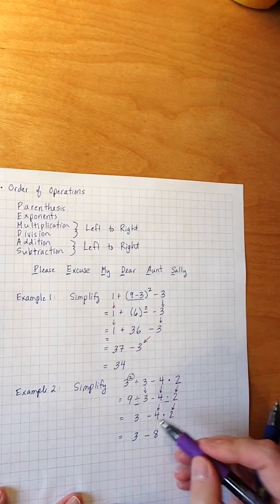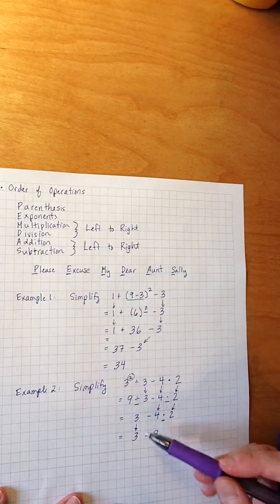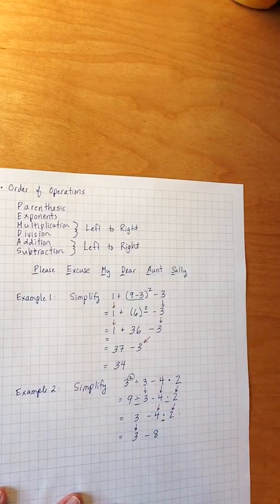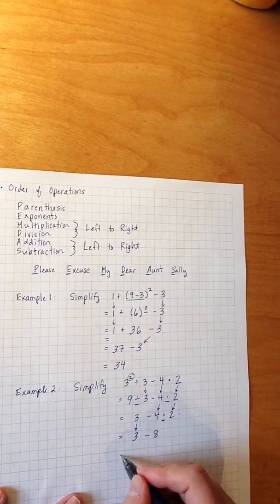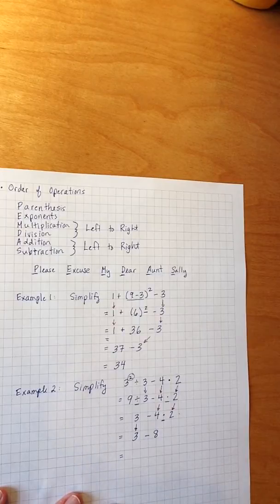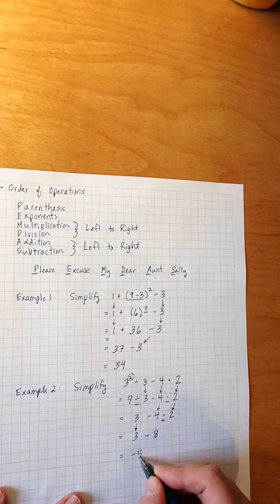And again, we can see that our 3, in this case it wasn't a 3 from the original problem, but at this point we didn't simplify anything with the 3, so it simply came straight down. Now that all my multiplication division is taken care of, I take care of any addition subtraction. Here I have 3 minus 8, which is negative 5.